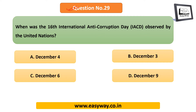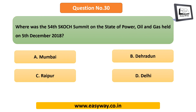Question 29: When was the 16th International Anti-Corruption Day observed by the United Nations? The answer is December 9. Question 30: Where was the 54th Scotch Summit on the state of power, oil and gas held? The answer is Delhi.